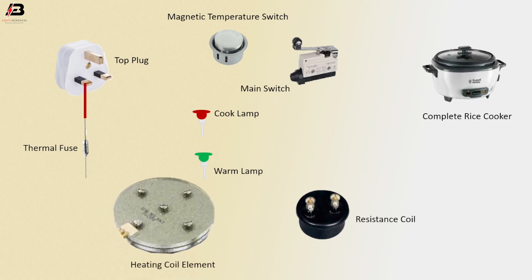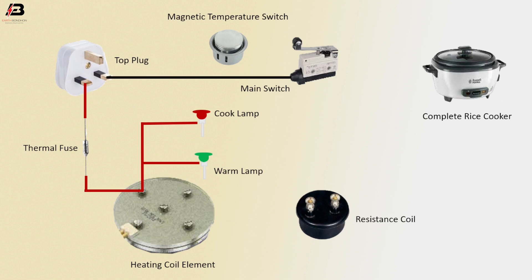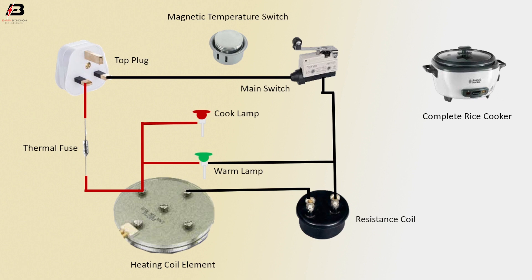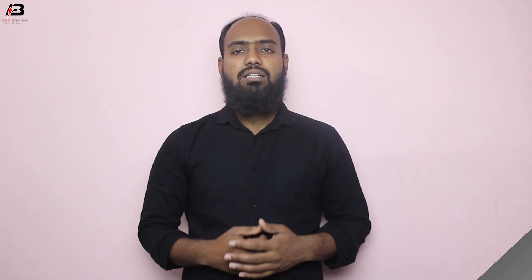Heating coil element: press connection from top plug to thermal fuse, then from fuse to connect heating coil element, then from heating element to connect cook lamp and warm lamp. Neutral connection from top plug to main switch, neutral connection from main switch to connect resistance coil, neutral connection from resistance coil to heating coil, neutral connection to warm lamp, neutral connection to cook lamp. Earth connection to heating coil and top plug.